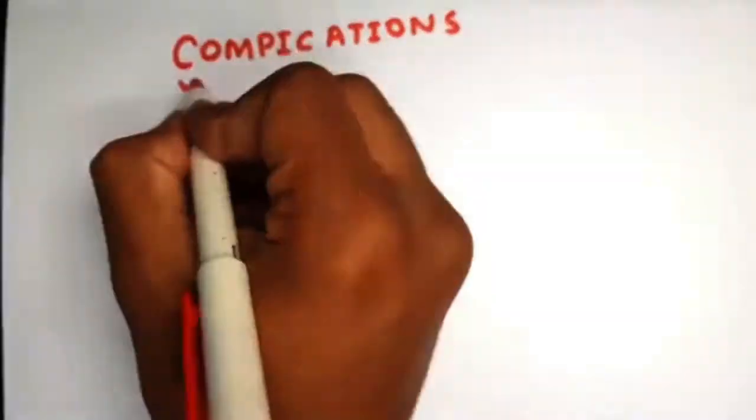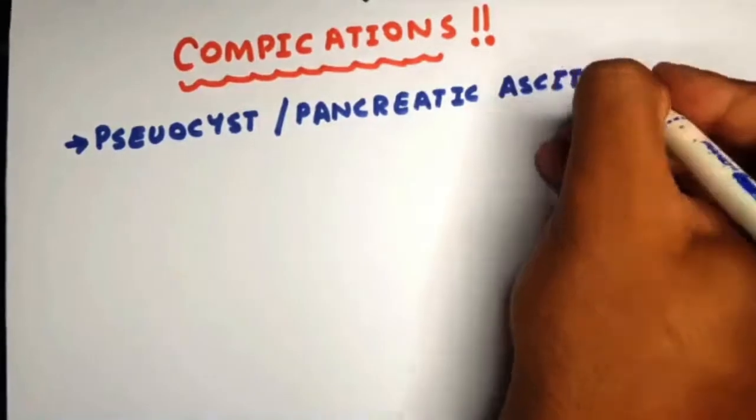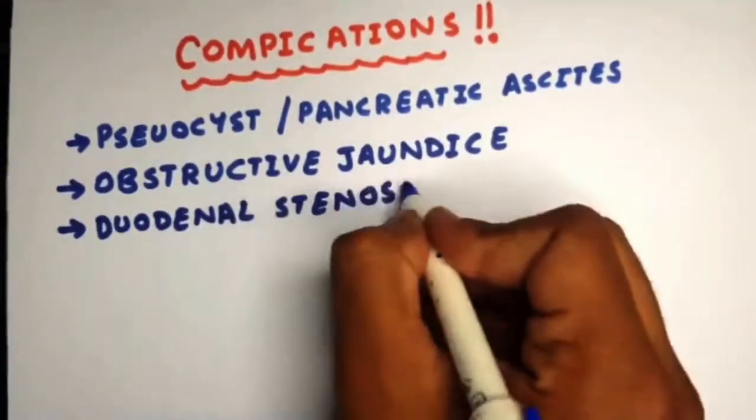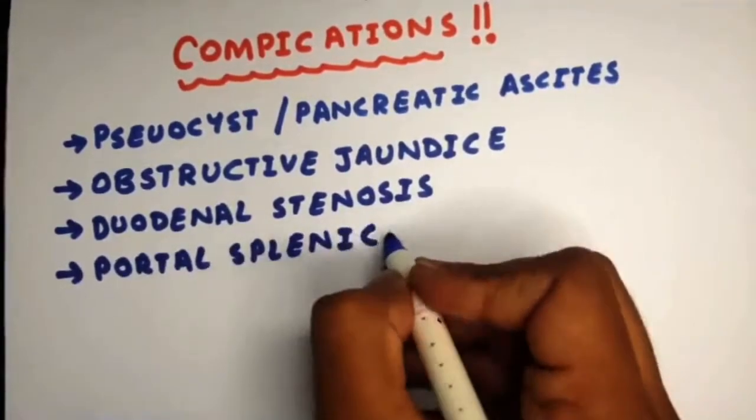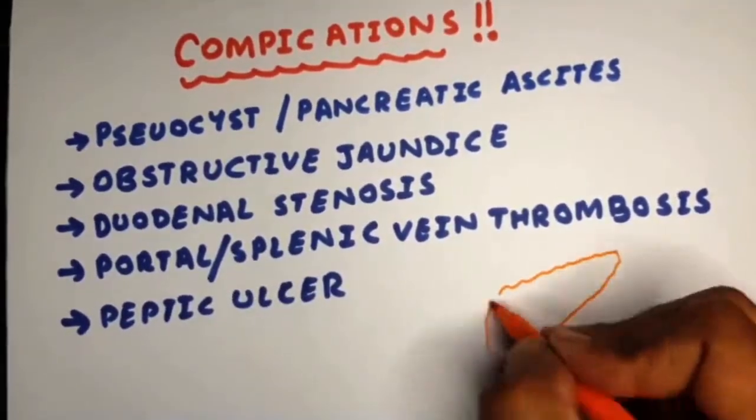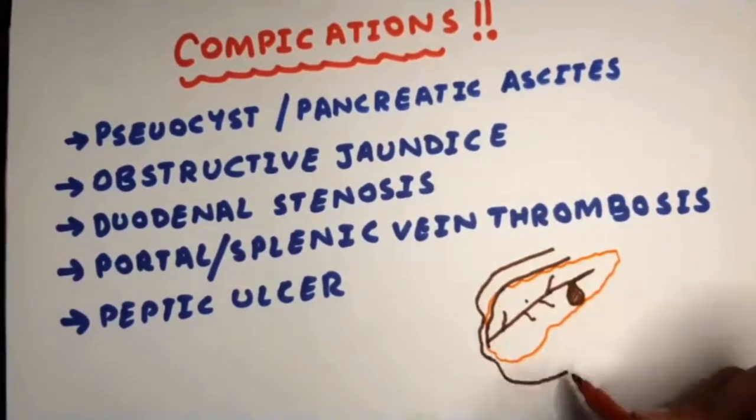If this goes on, it may complicate into pseudocysts, pancreatic ascites, obstructive jaundice, duodenal stenosis, portal and splenic vein thrombosis, or peptic ulcers—all because of the inflamed pancreas damaging surrounding structures.